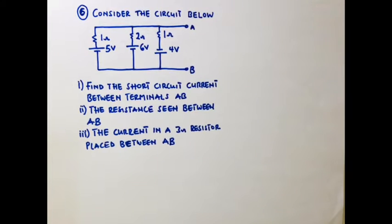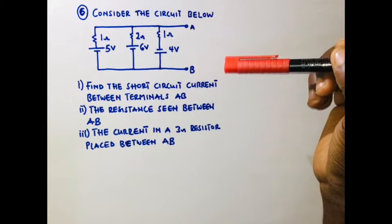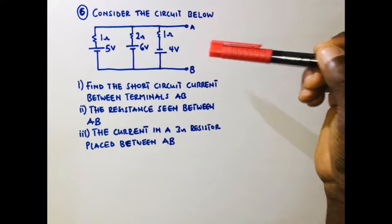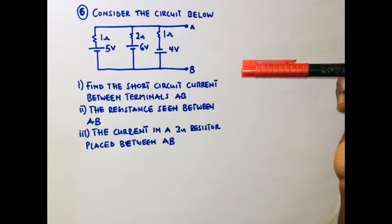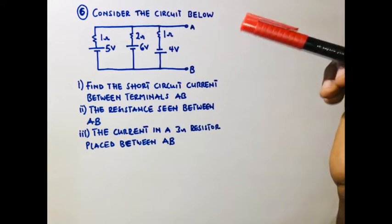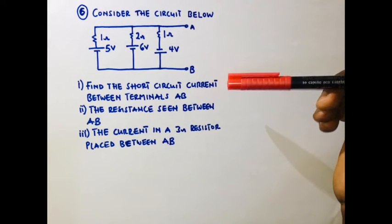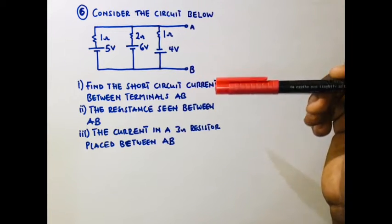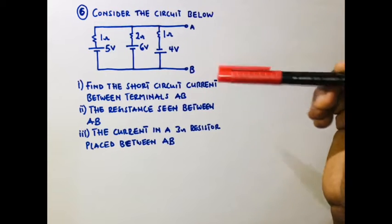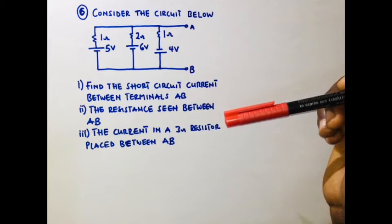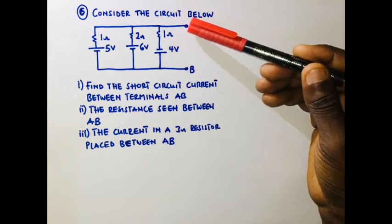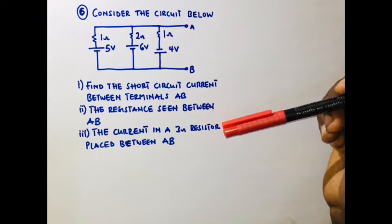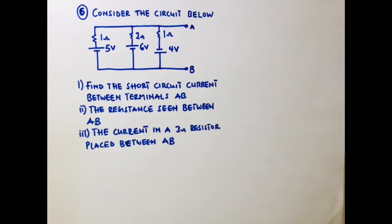In this video we are going to solve a question on the Applied Electricity exam 2011. We are going to consider the circuits below and find: (I) the short circuit current between terminals A and B, (II) the resistance seen between the two terminals, and then the current in a 3-ohm resistor placed between terminals A and B. Essentially, we are going to find the Norton's current, Norton's resistance, and then the current through the 3-ohm resistor.